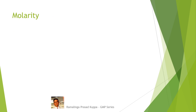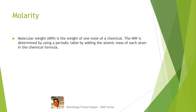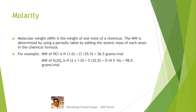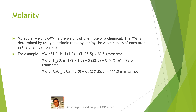Let us understand what is molarity. Molecular weight is the weight of one mole of a chemical, determined using a periodic table by adding the atomic mass of each atom in the chemical formula. It is good practice to have the atomic mass of common elements by heart. For example, molecular weight of HCl is H=1 plus Cl=35.5, total 36.5 grams per mole. Molecular weight of H₂SO₄ is 2×1 + 32 + 4×16, that is 98 grams per mole. Molecular weight of calcium chloride: Ca=40 plus 2×35.5, total 111 grams per mole.